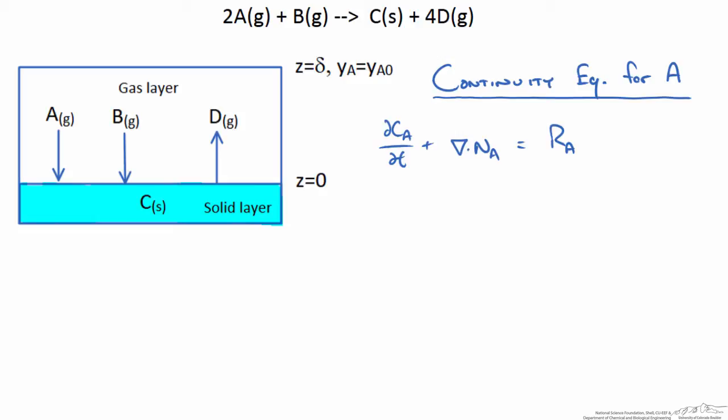Now for our divergence term we are examining the system in the z direction only. So we are going to write this as dNA as a function of z, so dNA/dz. Now we set this equal to our reaction term. However the reaction term is 0 since we do not have a reaction occurring within the diffusional path of A.